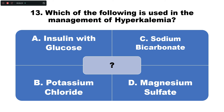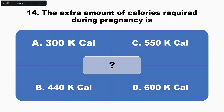Question number thirteen: Which of the following is used in the management of hyperkalemia? Option A: insulin with glucose, B: potassium chloride, C: sodium bicarbonate, D: magnesium sulfate. The correct answer is option A — insulin with glucose is used in the management of hyperkalemia.